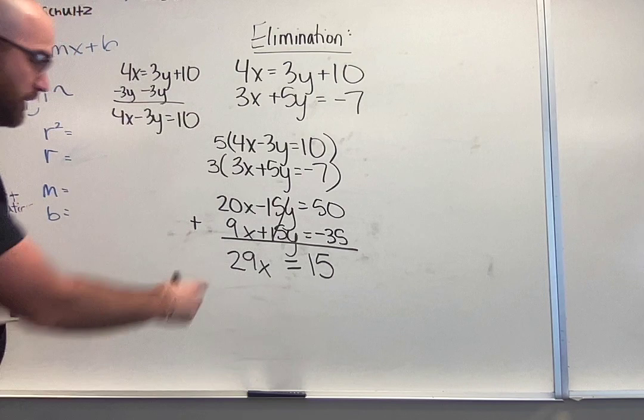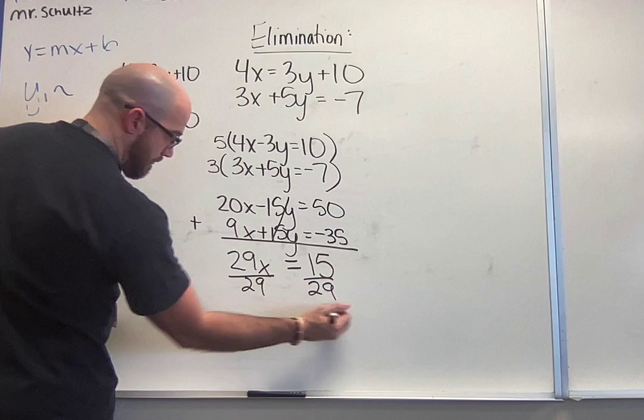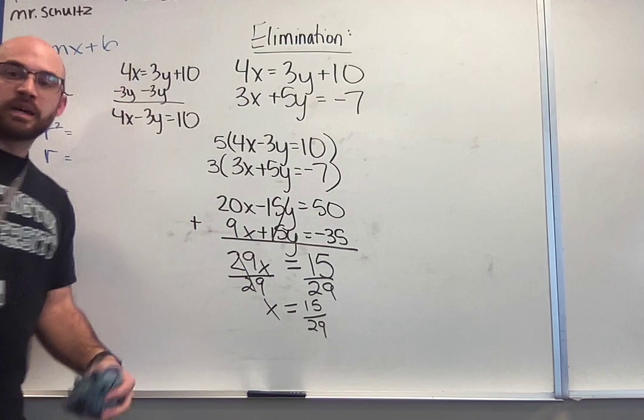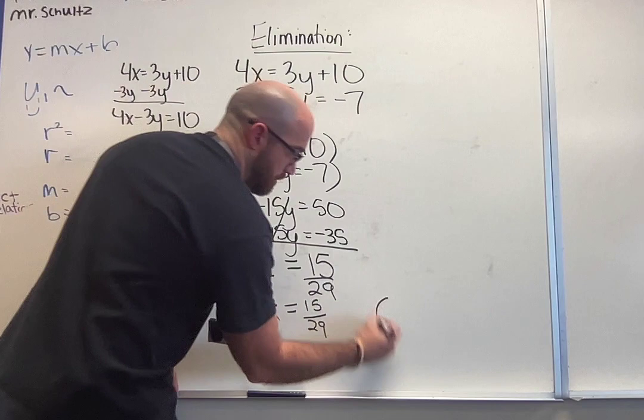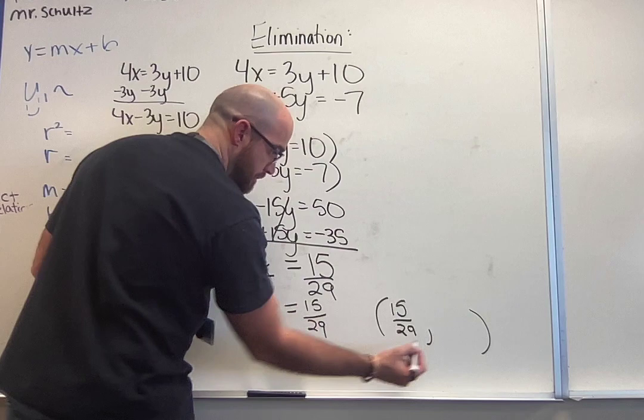So here I have 29x = 15. I'm going to divide both sides by 29, so I get x = 15/29. Not all of our numbers are going to be nice and pretty. This one's kind of ugly, but we're going to stick with it. So for my answer, I have my x value now is 15/29.